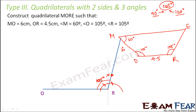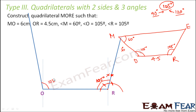If you don't remember these steps, please refer to the mathematics videos of junior classes to recap how to draw these angles. Similarly, draw angle R = 105° and angle O = 105° at the respective ends of OR. You have now drawn both angles.